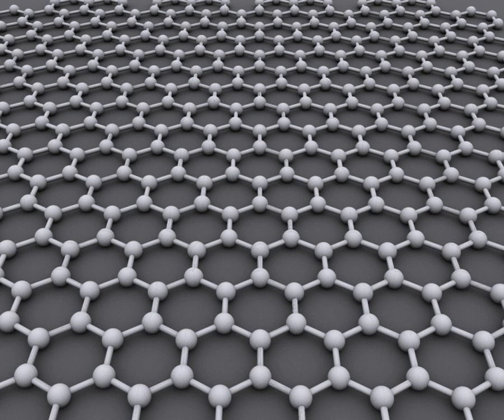Graphene is a crystalline allotrope of carbon with two-dimensional properties. Its carbon atoms are packed densely in a regular atomic-scale chicken wire pattern. Each atom has four bonds — one sigma bond with each of its three neighbors and one pi bond that is oriented out of plane. The atoms are about 1.42 Å apart. Graphene's hexagonal lattice can be regarded as two interleaving triangular lattices.